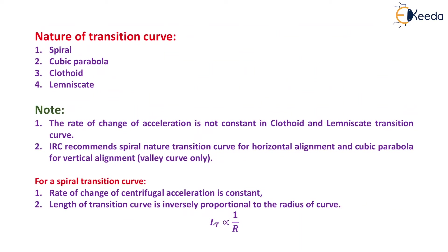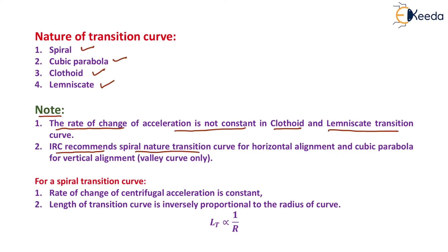The nature of transition curves is generally spiral, cubic parabola, clothoid, and lemniscate curve. Note that the rate of change of acceleration is not constant in clothoid and lemniscate transition curves, which is why they are not used as transition curves.